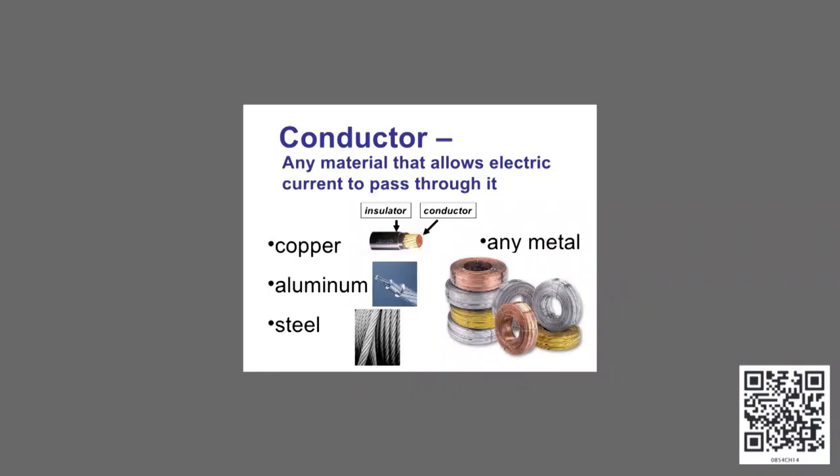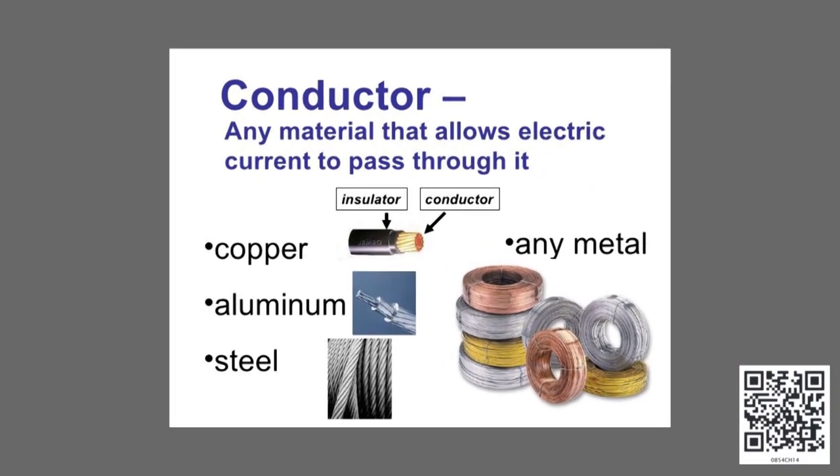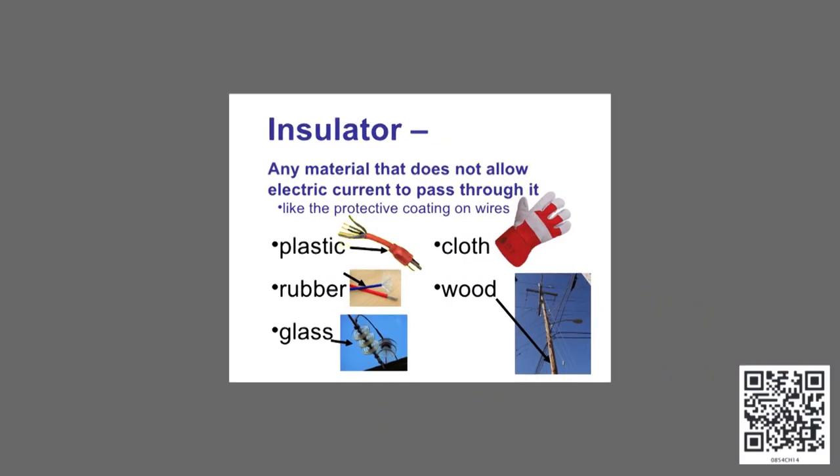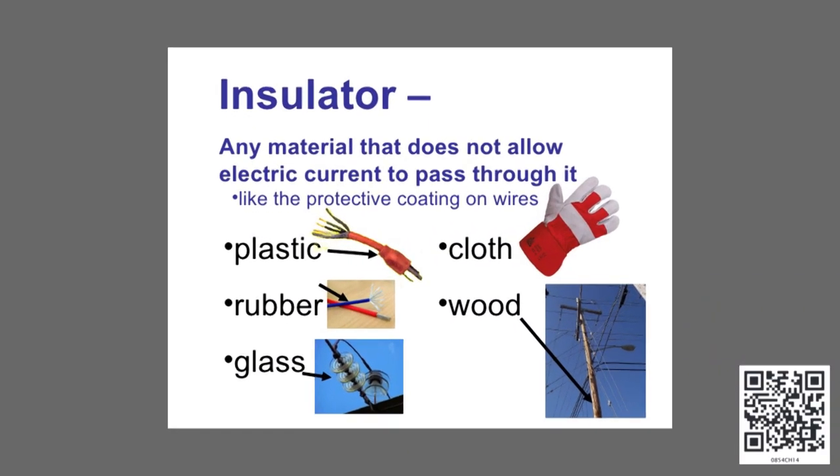Before we learn about the chemical effects of electric current, we must first know about the properties of materials and their relation with electricity. Any material which allows current to pass easily through it is known as a good conductor of electricity. Some examples are iron, copper, and aluminium. On the other hand, materials like plastic and glass do not allow current to pass through them easily — these are poor conductors of electricity.